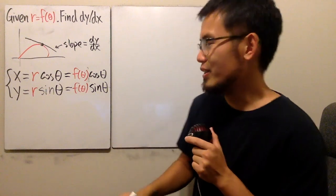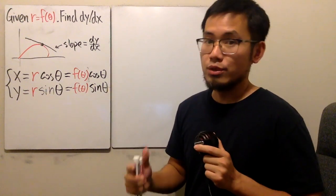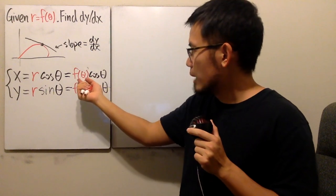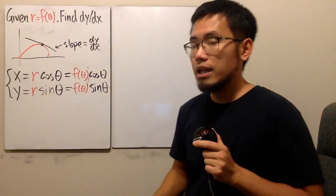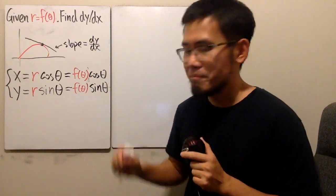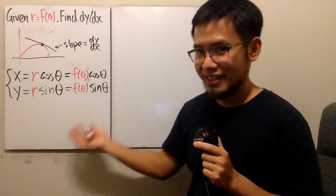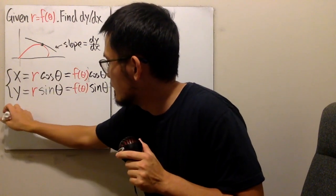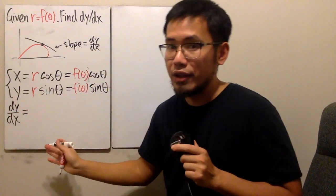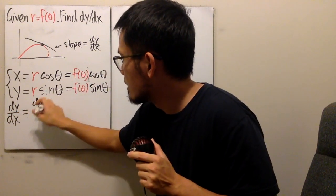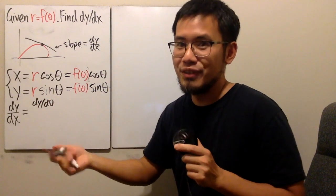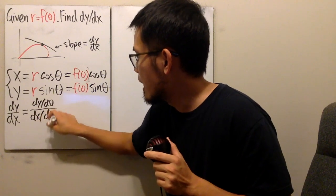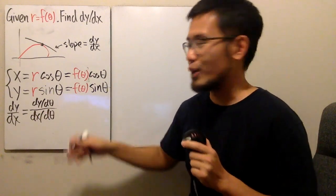I would recommend you always do this whenever we are trying to find dy/dx of a polar curve, because sometimes you might be able to simplify the expressions. If you just memorize the formula you are about to see, that's not a good idea. Now, because we are talking about a parametric function, dy/dx is the same as dy/d-theta over dx/d-theta — because previously we used t, but here we use theta. Then we just differentiate whatever we need.